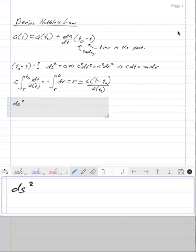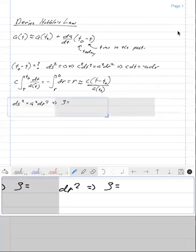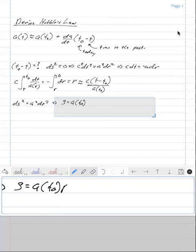The interval is ds squared equals a squared dr squared. If we take the integral of this, so today, the proper distance is equal to s times a of t naught times r.